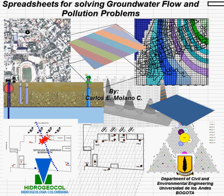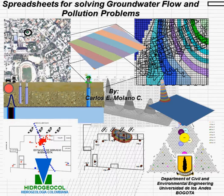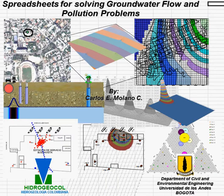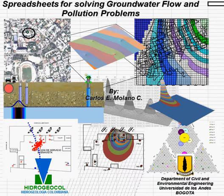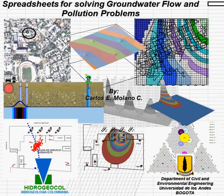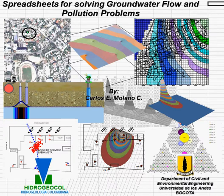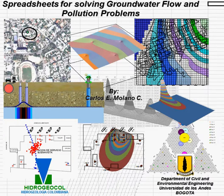Welcome to Spreadsheets for solving groundwater flow and pollution problems. The use of a spreadsheet can provide cost-effective means for solving a wide range of simple and complex groundwater flow and pollution problems in a very efficient way using interactive graphics output without complex programming, virtually without any macro. I find this feature extremely useful in the groundwater teaching and learning process.